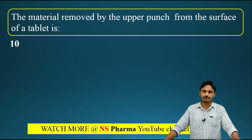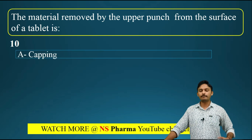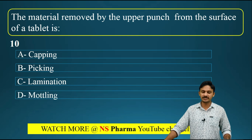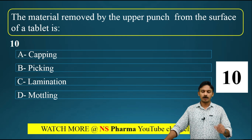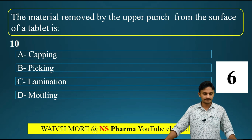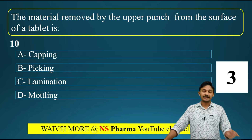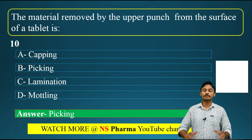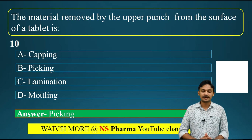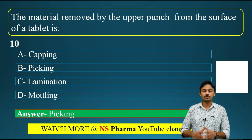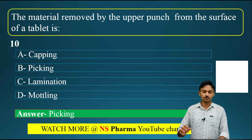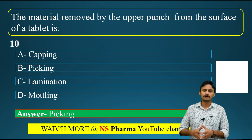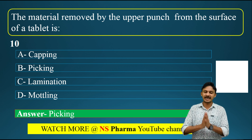Question number ten: the material removed by the upper punch from the surface of the tablet is called? Options are: option A - capping, option B - picking, option C - lamination, option D - mottling. This is related to tablet defects. The correct answer is option B - picking. Capping is the partial or complete removal of the top or bottom portion of the tablet.